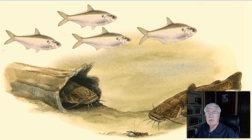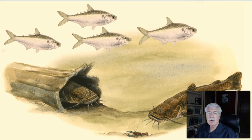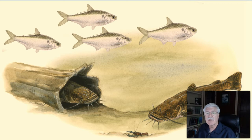Gizzard shad eat plankton and they spawn over gravel and grass, broadcasting their eggs which adhere to various kinds of underwater substrates. When the flathead catfish is small, they eat invertebrates such as worms, insects, and crayfish.